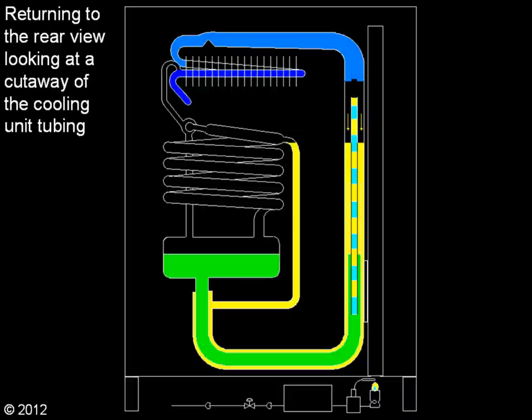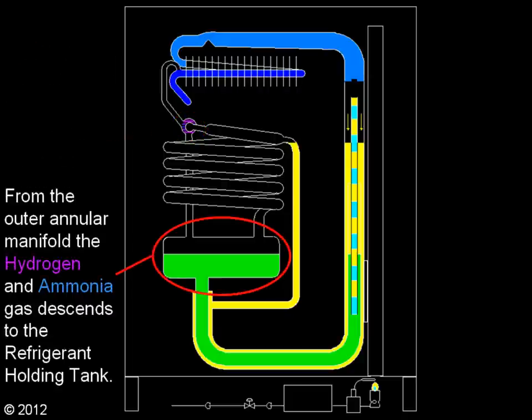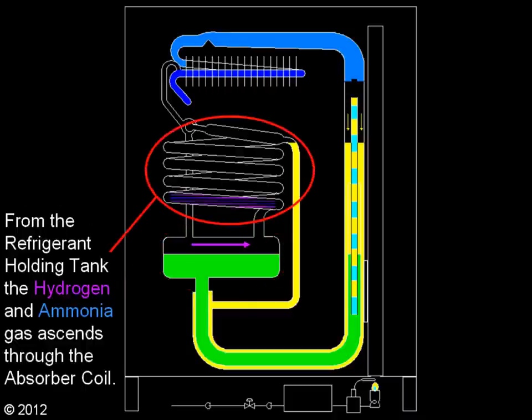Returning to the rear view, looking at a cutaway of the cooling unit tubing. The hydrogen and ammonia gas exits the evaporator through the outer annular manifold. From the outer annular manifold, the hydrogen and ammonia gas descends to the refrigerated holding tank. From the refrigerated holding tank, the hydrogen and ammonia gas ascends through the absorber coil.